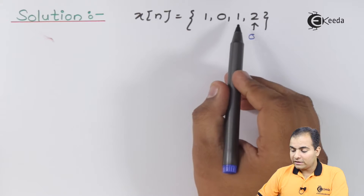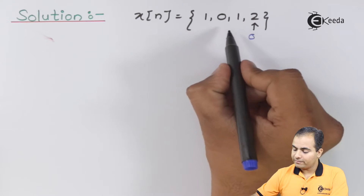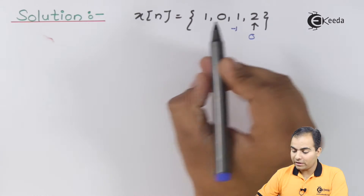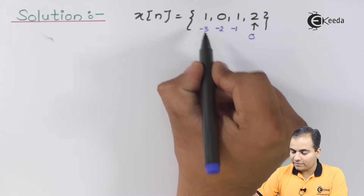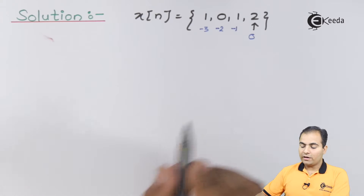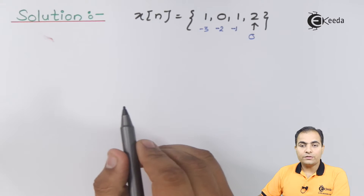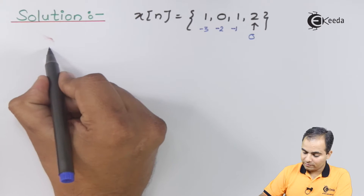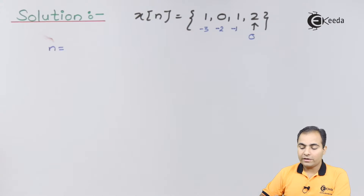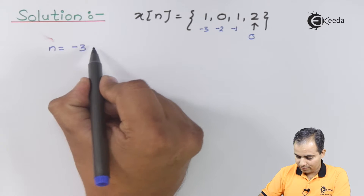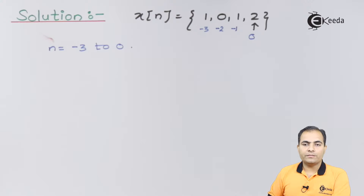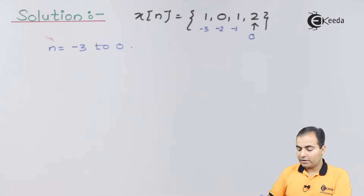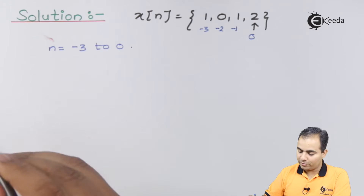Our origin has amplitude 2. All samples are on the left-hand side, so the instances are negative. At minus one we have amplitude 1, at minus two we have amplitude 0, and at minus three we have amplitude 1. Therefore, our small n varies from minus three to zero. We will write the definition of the Z-transform and substitute n from minus three to zero.